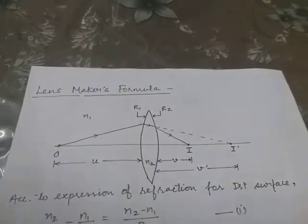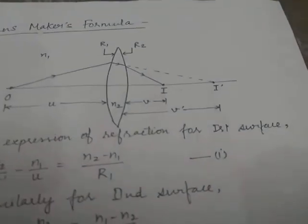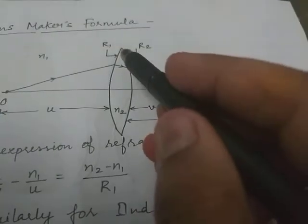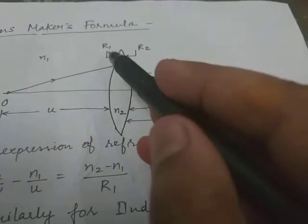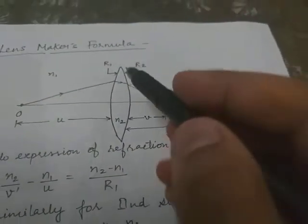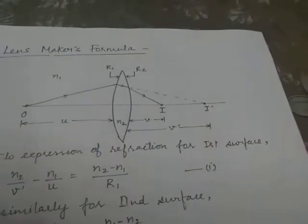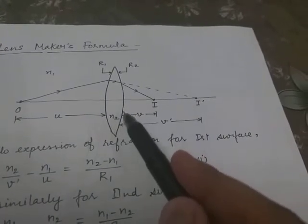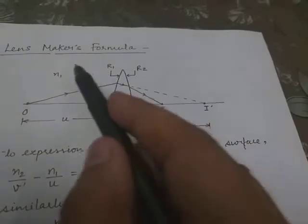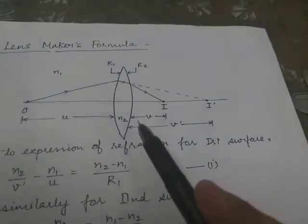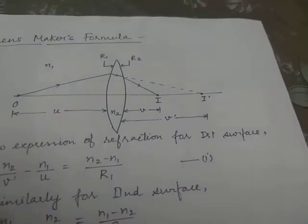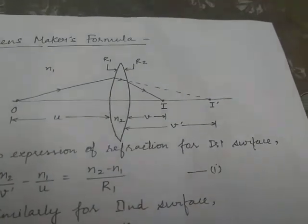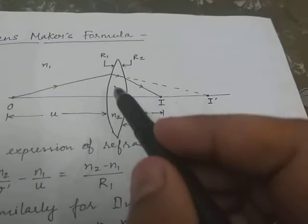Let's start with our next topic, the lens maker's formula. We have a convex lens with two radii of curvature R1 and R2. The radius of curvature of the first surface is R1 and of the second surface is R2. The outer medium is N1 and the inner medium inside the lens is N2, meaning the refractive index of the lens material is N2. When the outer medium is air, N1 becomes 1 and N2 becomes N. We have a point object O kept at distance U from the lens.